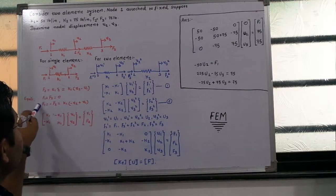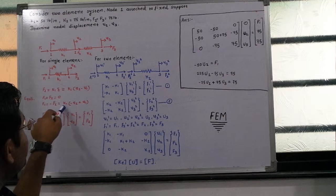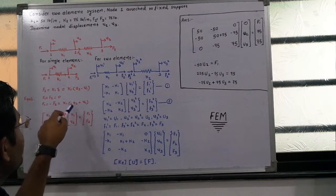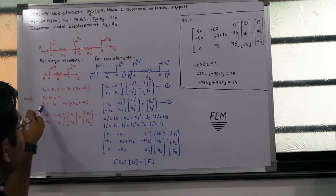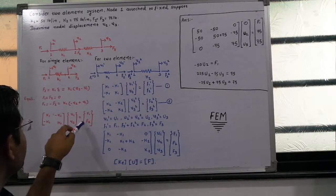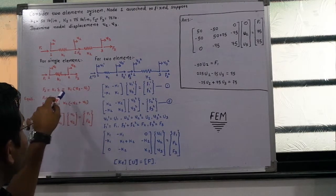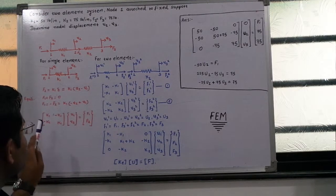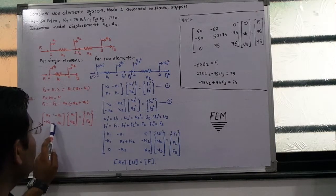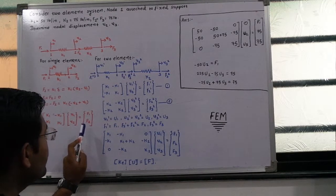From these two equations, representing them in matrix form gives: K1·U1 minus K1·U2 equals F1, and minus K1·U1 plus K1·U2 equals F2. This yields the stiffness matrix [K1, -K1; -K1, K1] for one element, the nodal displacement matrix [U1; U2], and the force matrix [F1; F2].